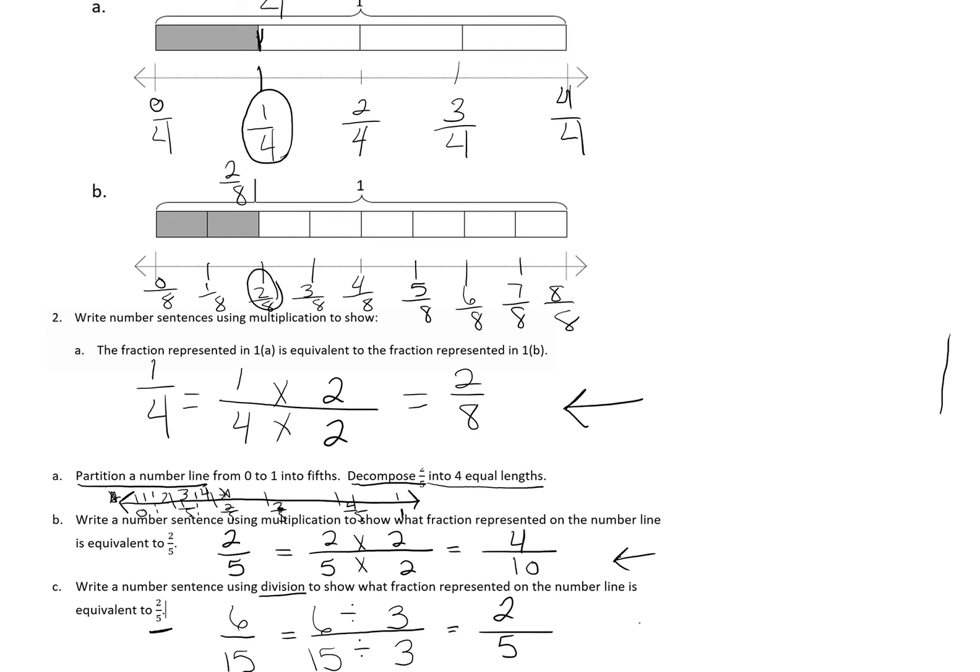This last one is going to be the tricky one, but if we remember to go backwards using multiplication, we can pick any number to multiply by, and then when we multiply across, it'll get us our new equivalent fraction. I hope this is helpful. If you have any questions, please don't hesitate to message me on Remind.